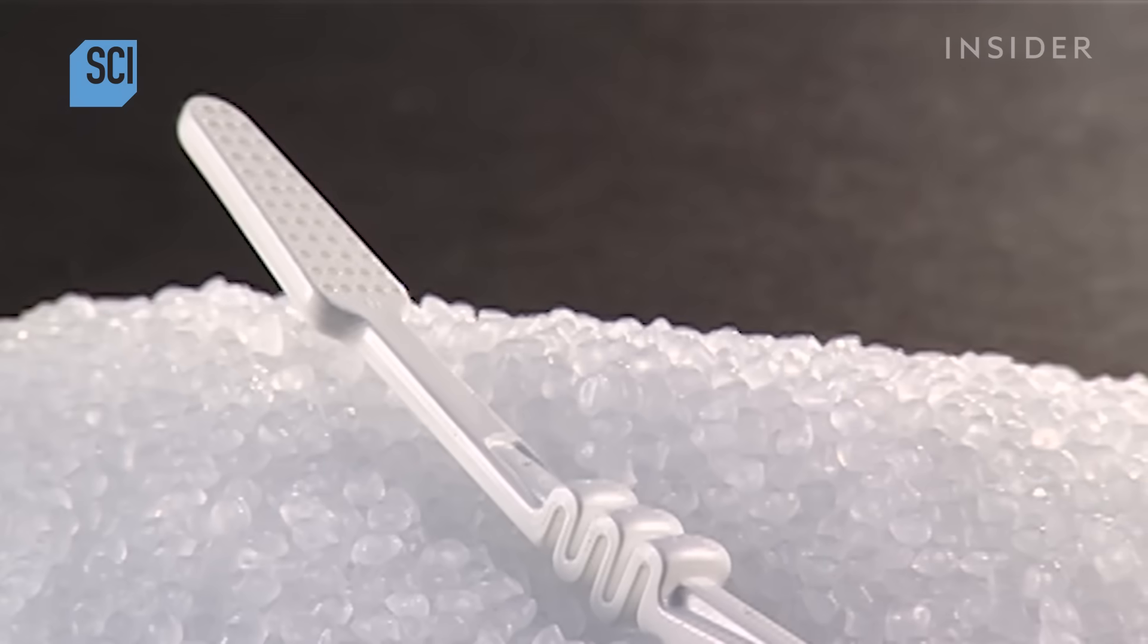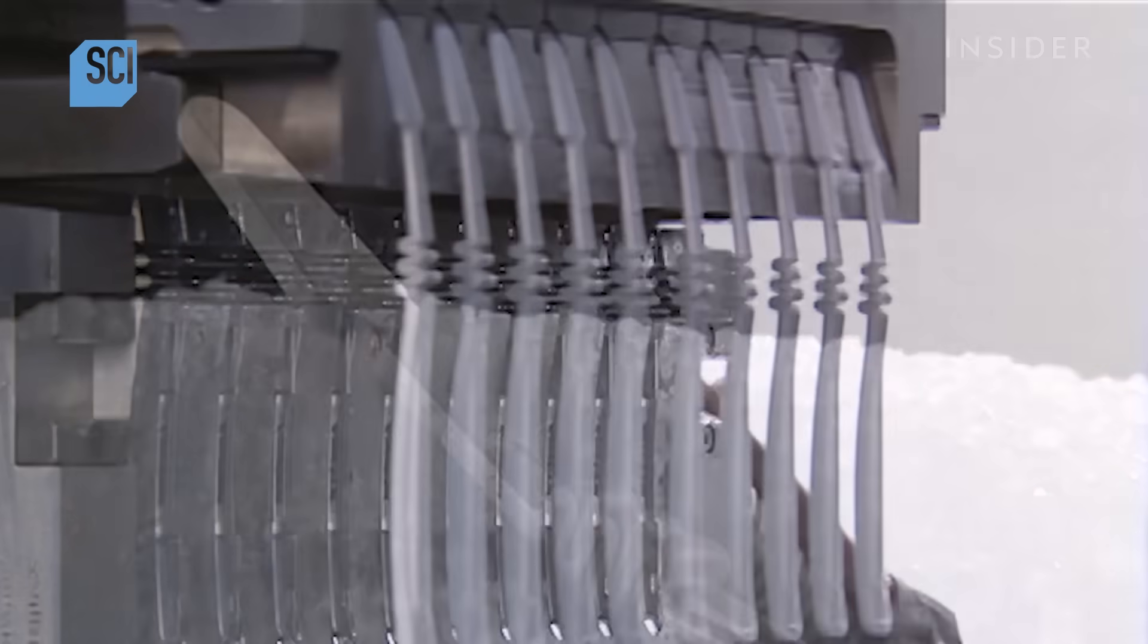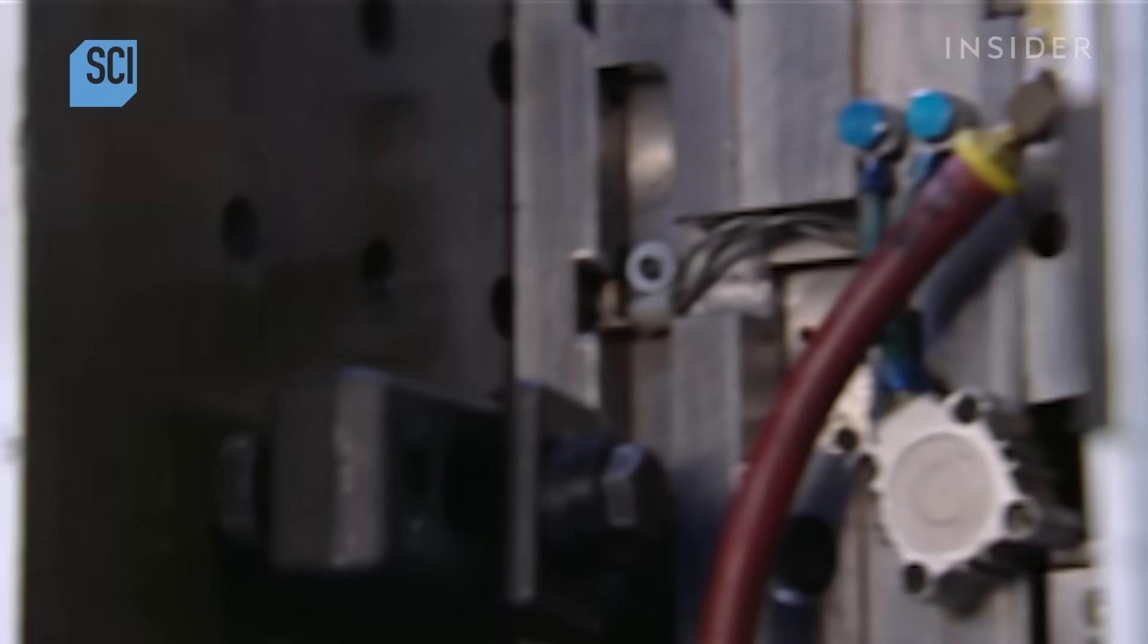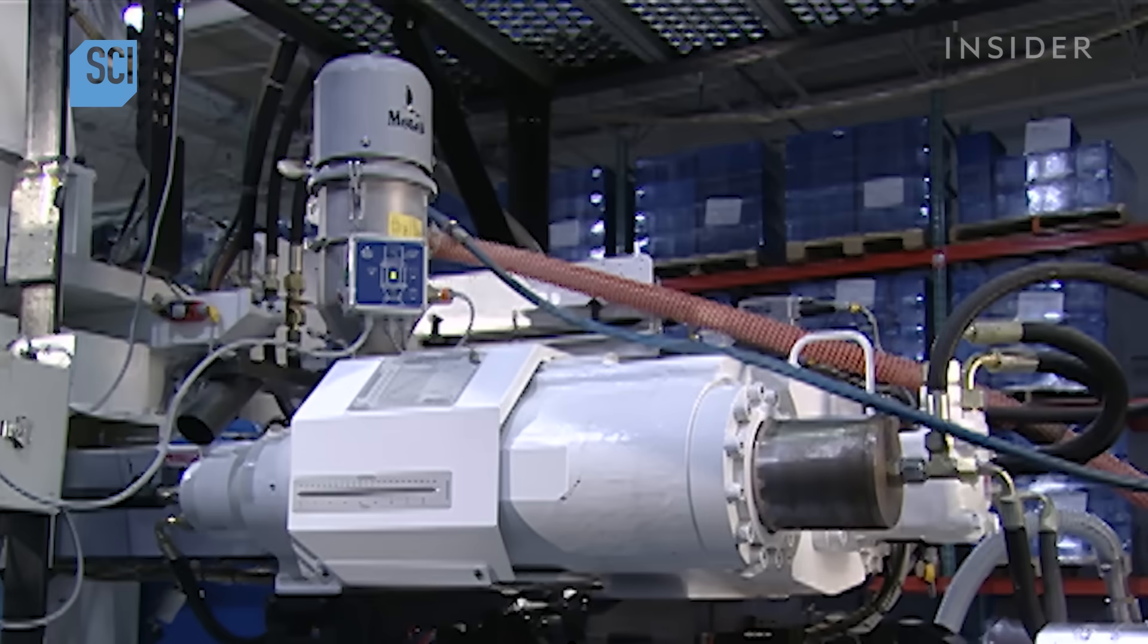The head of each handle has up to 56 holes for bristles. This machine generates 10 handles every 35 seconds. That works out to 27,000 handles in 24 hours.